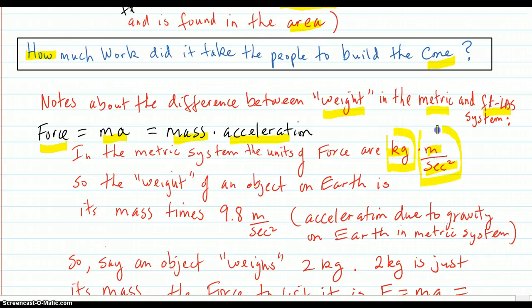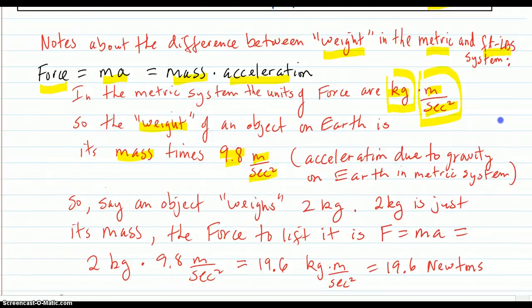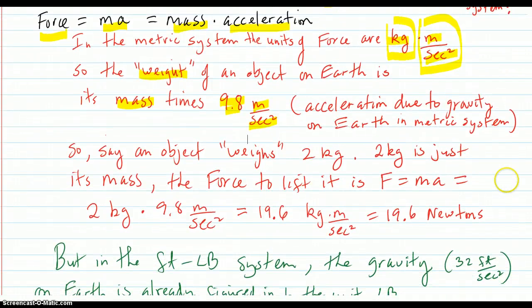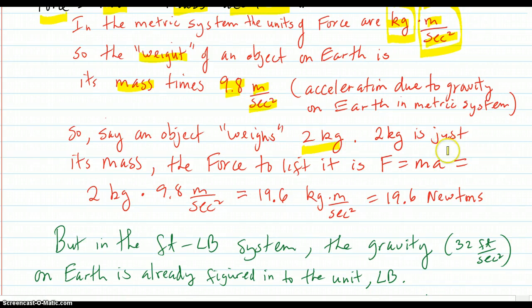The acceleration due to gravity is in meters per second squared. So the weight of an object on Earth is its mass times 9.8 approximate meters per second squared, which is the acceleration due to gravity on Earth in the metric system. So when you say an object weighs 2 kilograms, 2 kilograms is just the mass part anywhere in space on Earth, and you multiply it by the 9.8 to get the weight.